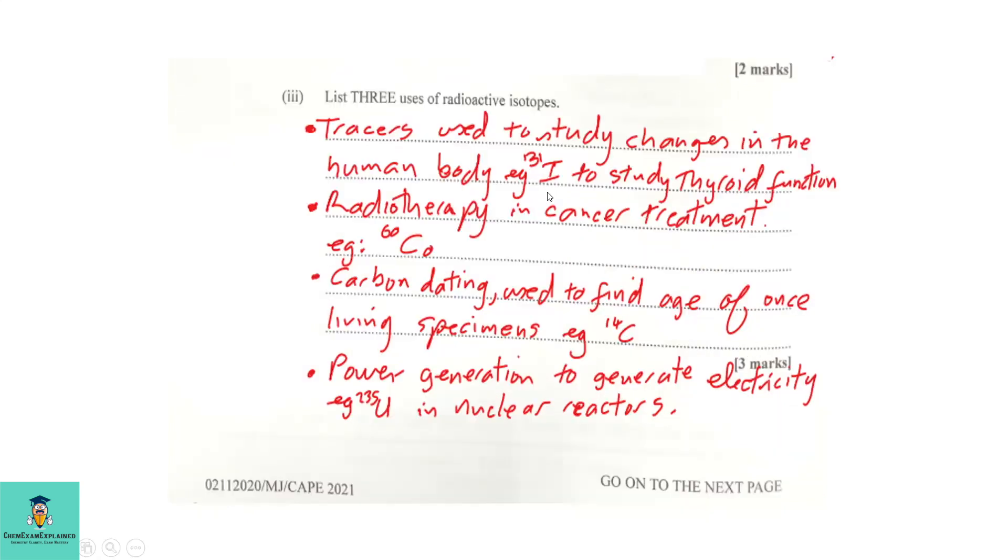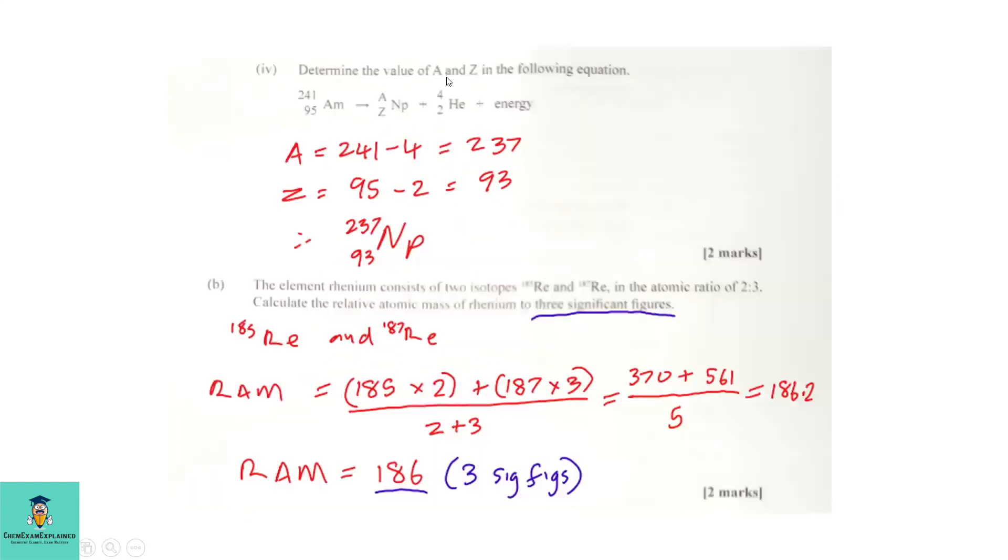Let's move on. Determine the value of A and Z in the following equation. Here we have the equation, and it is showing alpha decay. Now when you have alpha decay, what you have taking place is the mass number will decrease by 4, and the atomic number decrease by 2. So if that's the case, A will move to 237, and Z will move to 93.